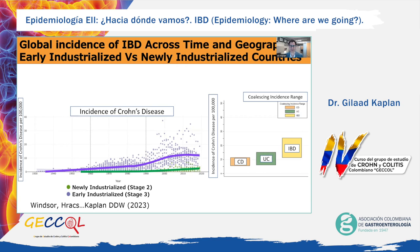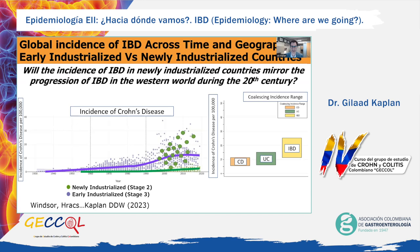In contrast, the green symbols represent newly industrialized countries in Africa, Asia, and Latin America. While the incidence of IBD is overall lower than that of the Western world, we can see it is rising in newly industrialized countries. In the 1990s, most countries reported incidence well below 1 per 100,000, with incidence rising to 8 per 100,000 in more recent times in some countries in Asia and Latin America. The fundamental question is: will the incidence of IBD in newly industrialized countries mirror the progression seen in the Western world during the 20th century? If so, the implications for countries like China and India, with populations over a billion people, will be very profound.